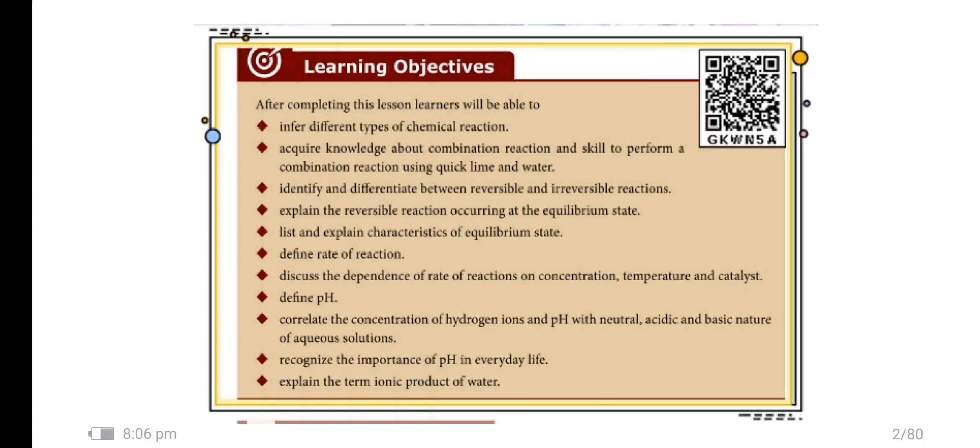After completing this lesson, learners will be able to infer different types of chemical reaction, acquire knowledge about combination reaction and skill to perform a combination reaction using quick lime and water, identify the difference between reversible and irreversible reactions, and list and explain the characteristics of equilibrium state.